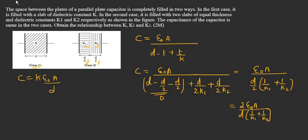In this question, they are asking us to find the relation connecting k, k1 and k2. They have mentioned that the capacitance for case 1 and case 2 are equal. For case 1, the capacitance is k epsilon 0 A by d and for case 2, the capacitance is 2 epsilon 0 A divided by d into 1 by k1 plus 1 by k2. Let us equate 1 and 2.